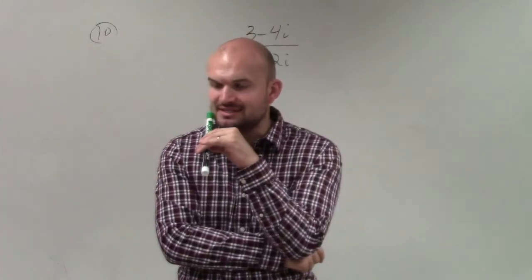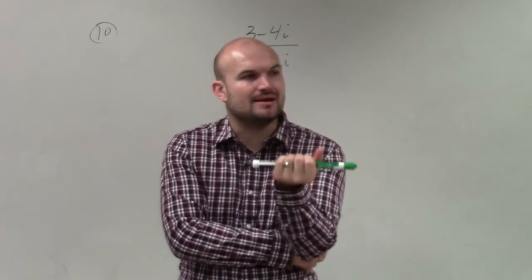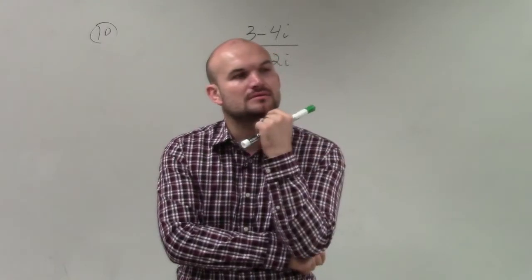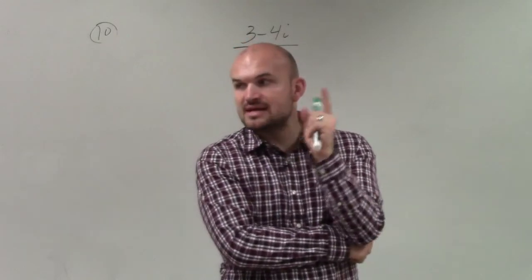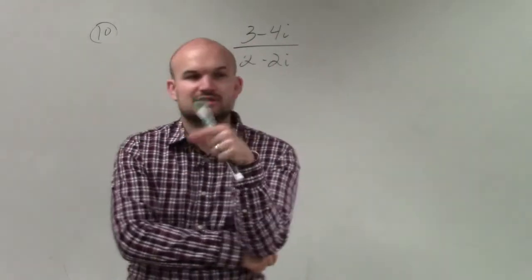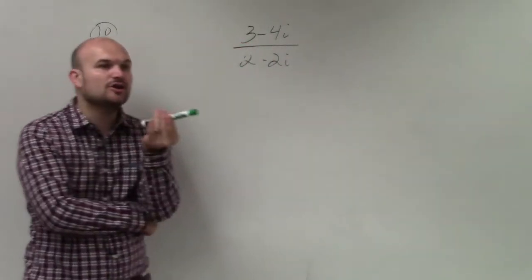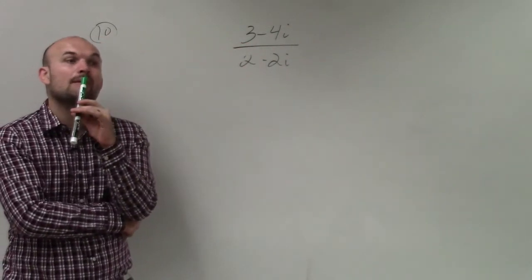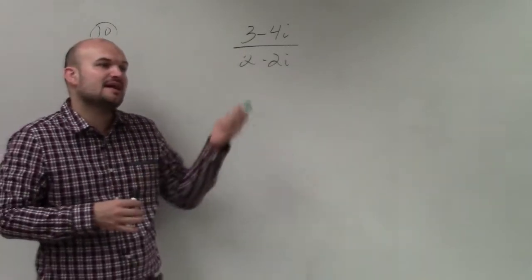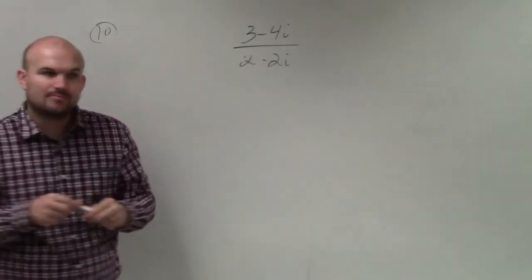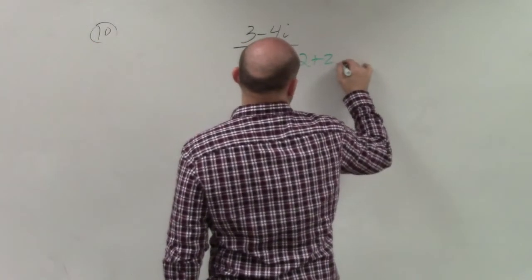If you guys remember when we were doing dividing rational expressions, we don't want to leave a rational expression with i in the denominator. So when there was just a monomial of i, we always just multiply by i in the numerator and denominator. But when we have a binomial of i, what we did, Brianna, was we multiplied by what we called the complex conjugate, which is going to be exactly the same, but instead of negative, it's going to be positive. So what we're going to do is we're going to want to multiply by 2 plus 2i.